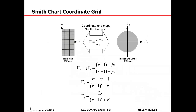The Smith chart is actually in the reflection coefficient plane. The domain space is the right half of the complex impedance plane. The grid axes are vertical lines of constant resistance and horizontal lines of constant reactance — those lines map into circles in the reflection coefficient space and the interior of the unit disk, according to the transformation equations.